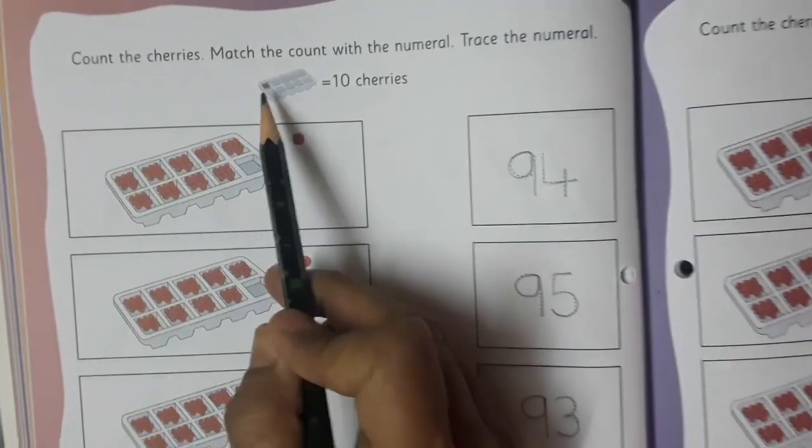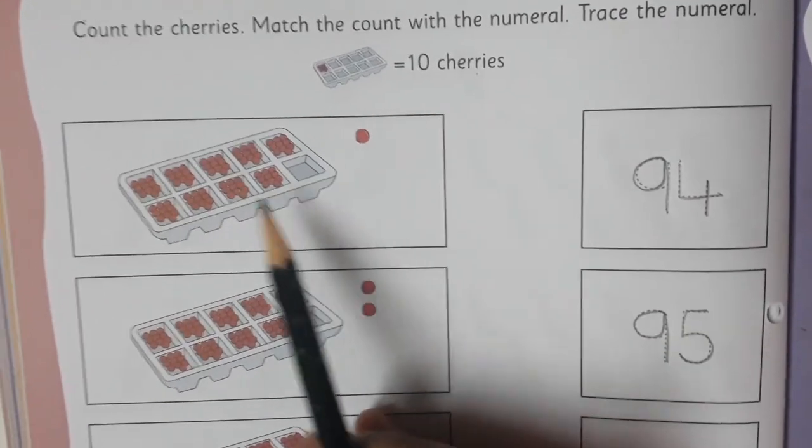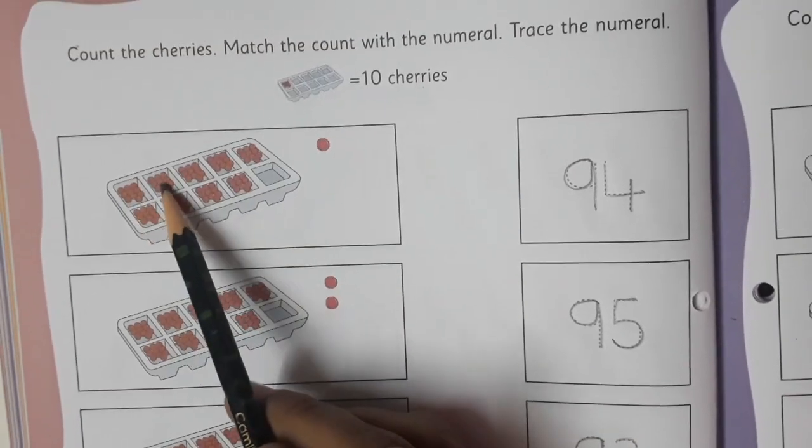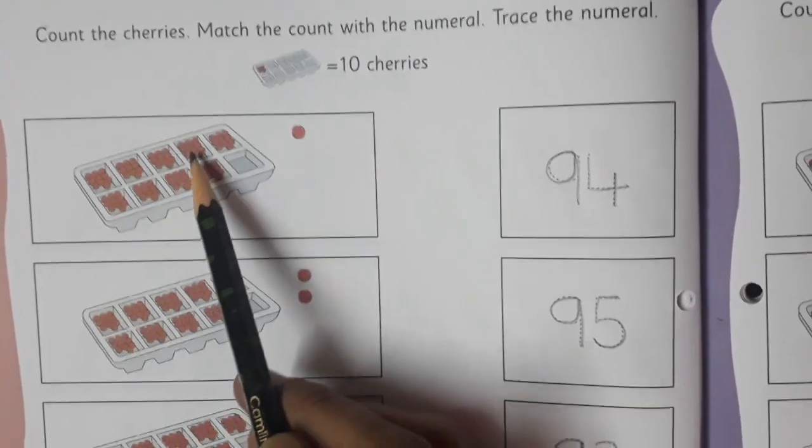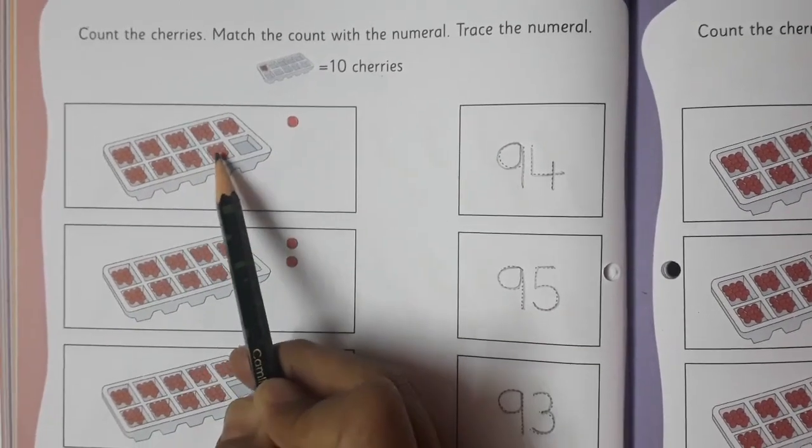Now here, one box of cherries is equal to 10 cherries. This we already know, right? So now we have to count how many boxes of cherries are there: 10, 20, 30, 40, 50, 60, 70, 80, and 90.